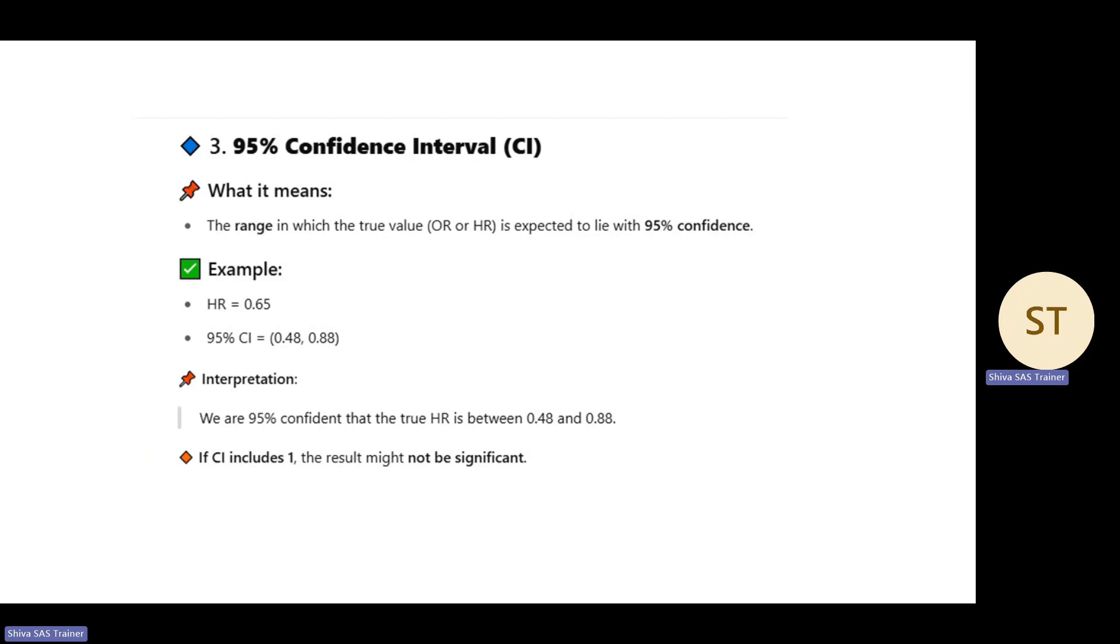If CI includes one, the result might not be significant. CI is the range, hazard ratio is risk, hazard ratio compares risk over time.